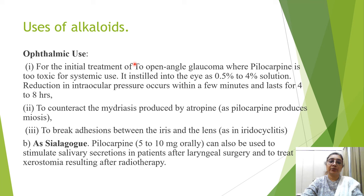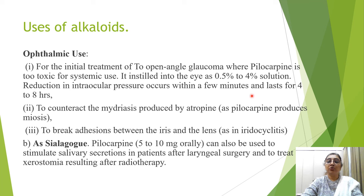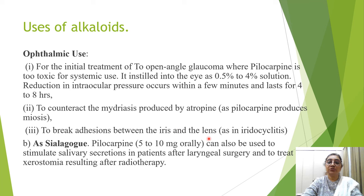Pilocarpine can be instilled into the eye as a 0.5 to 4% solution, reducing intraocular pressure within a few minutes, lasting 4 to 8 hours. A second use is to counteract mydriasis produced by atropine and to break adhesions between the iris and lens, for example in iridocyclitis where iris inflammation causes it to stick to the lens. Pilocarpine and atropine can be given alternately for this purpose.